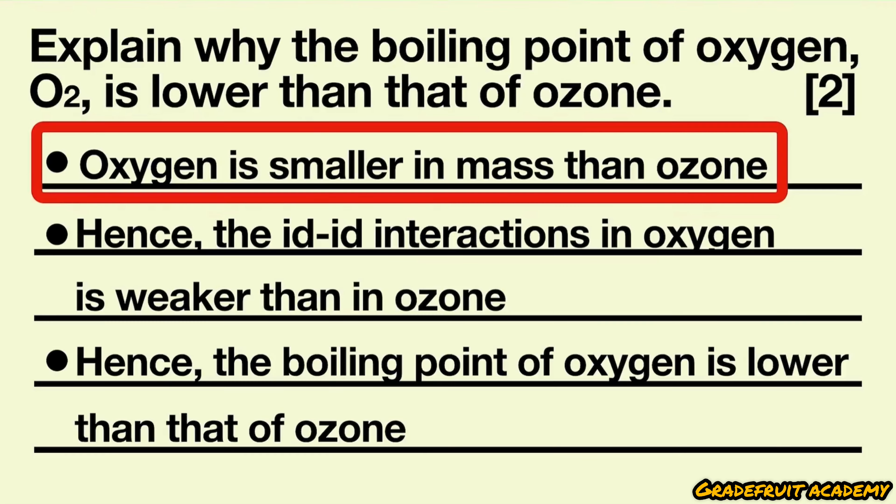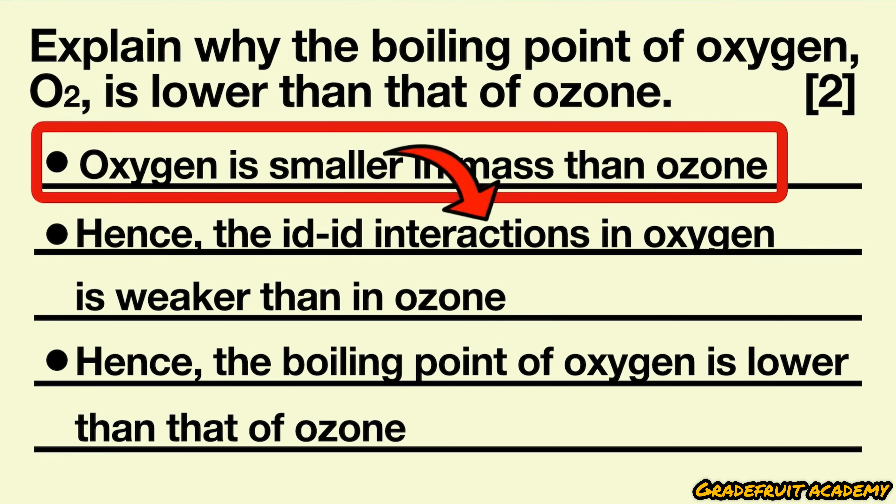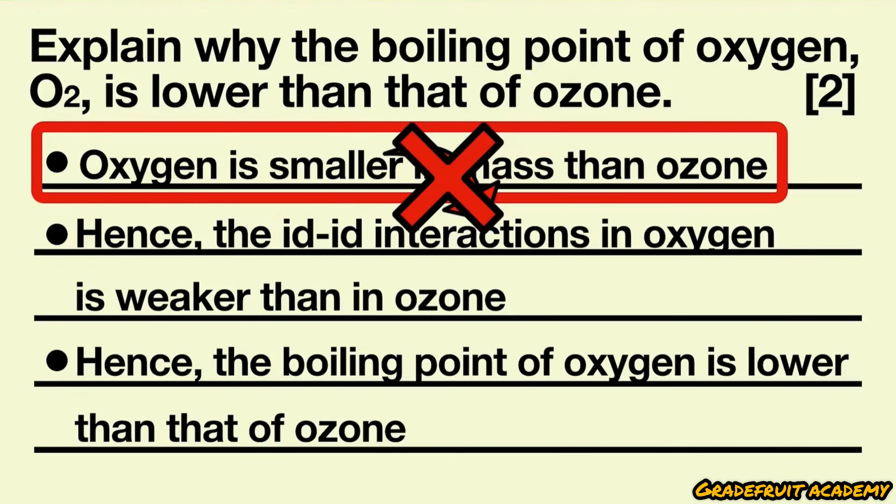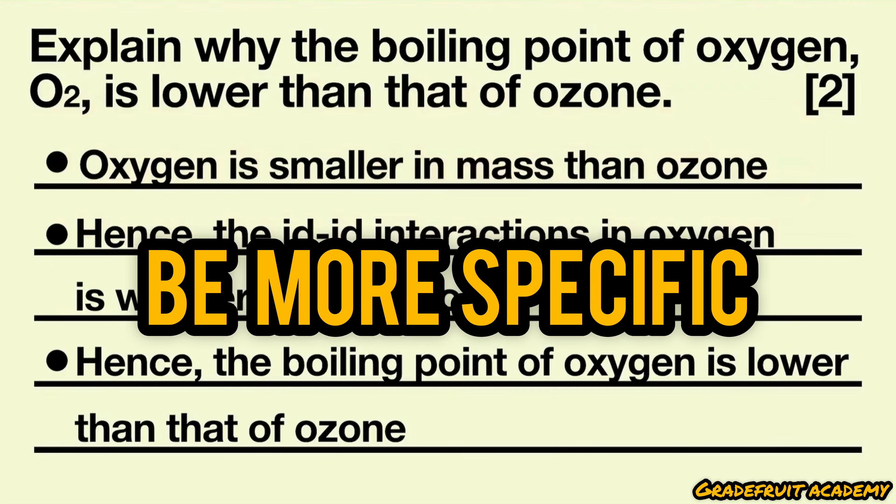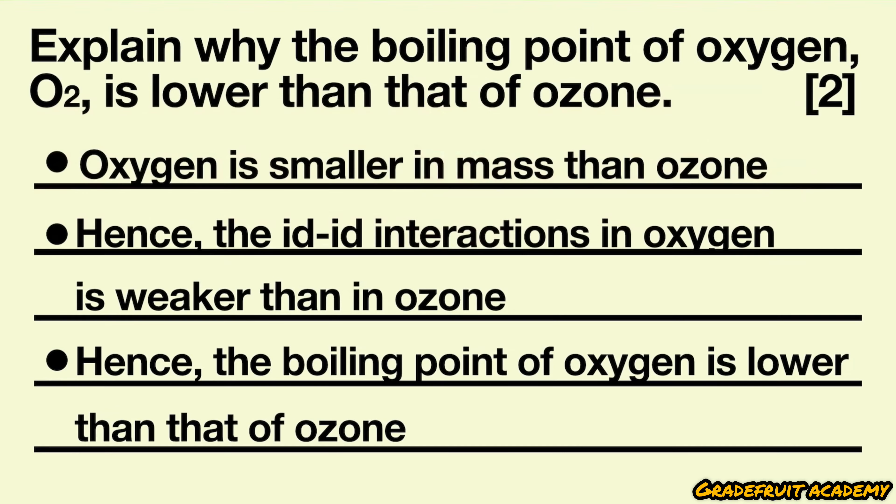Let's take a look at the first bullet point. Saying that oxygen is smaller in mass is too vague and it doesn't directly cause the id-id interactions to be weaker in oxygen in the next bullet point. So what we should do is to go one step further and be more specific by using conceptual keywords.